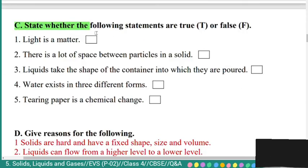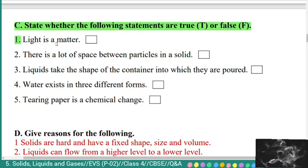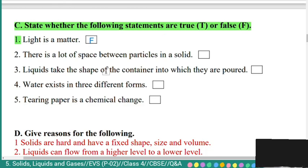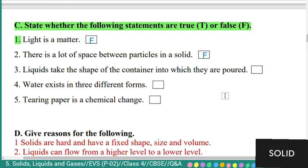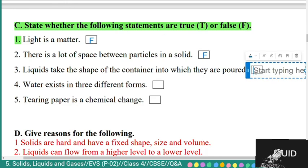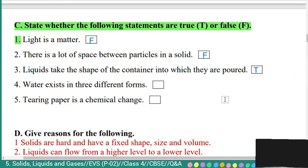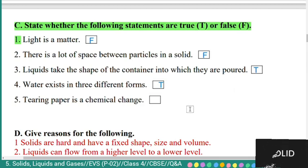State whether the following statements are true or false. First: light is a matter — False. Second: there is a lot of space between particles in a solid — False. Third: liquids take the shape of the container into which they are poured — True. Fourth: water exists in three different forms — True. Fifth: tearing paper is a chemical change — False.